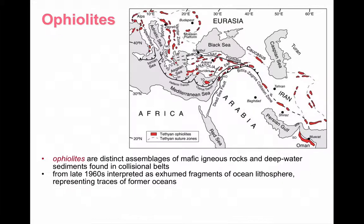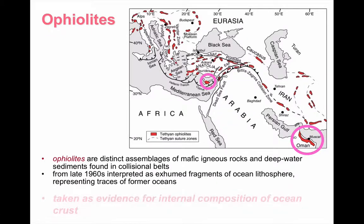For our purposes, there are two of these ophiolites that preserve these features very well: one in Cyprus and the other in Oman. These two sets of rocks, we think, give us the evidence for the composition of the oceanic crust. We'll look at that evidence in a moment.